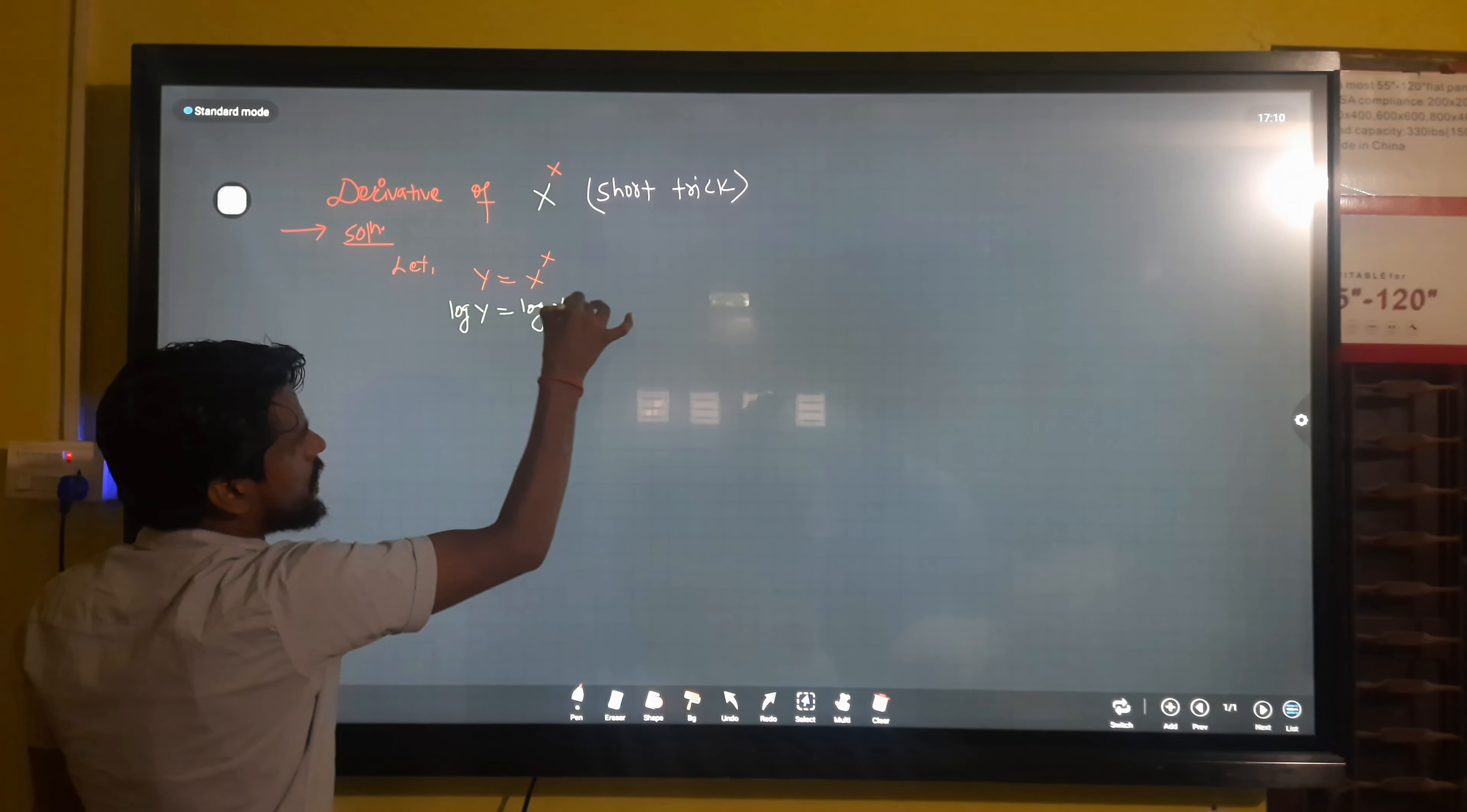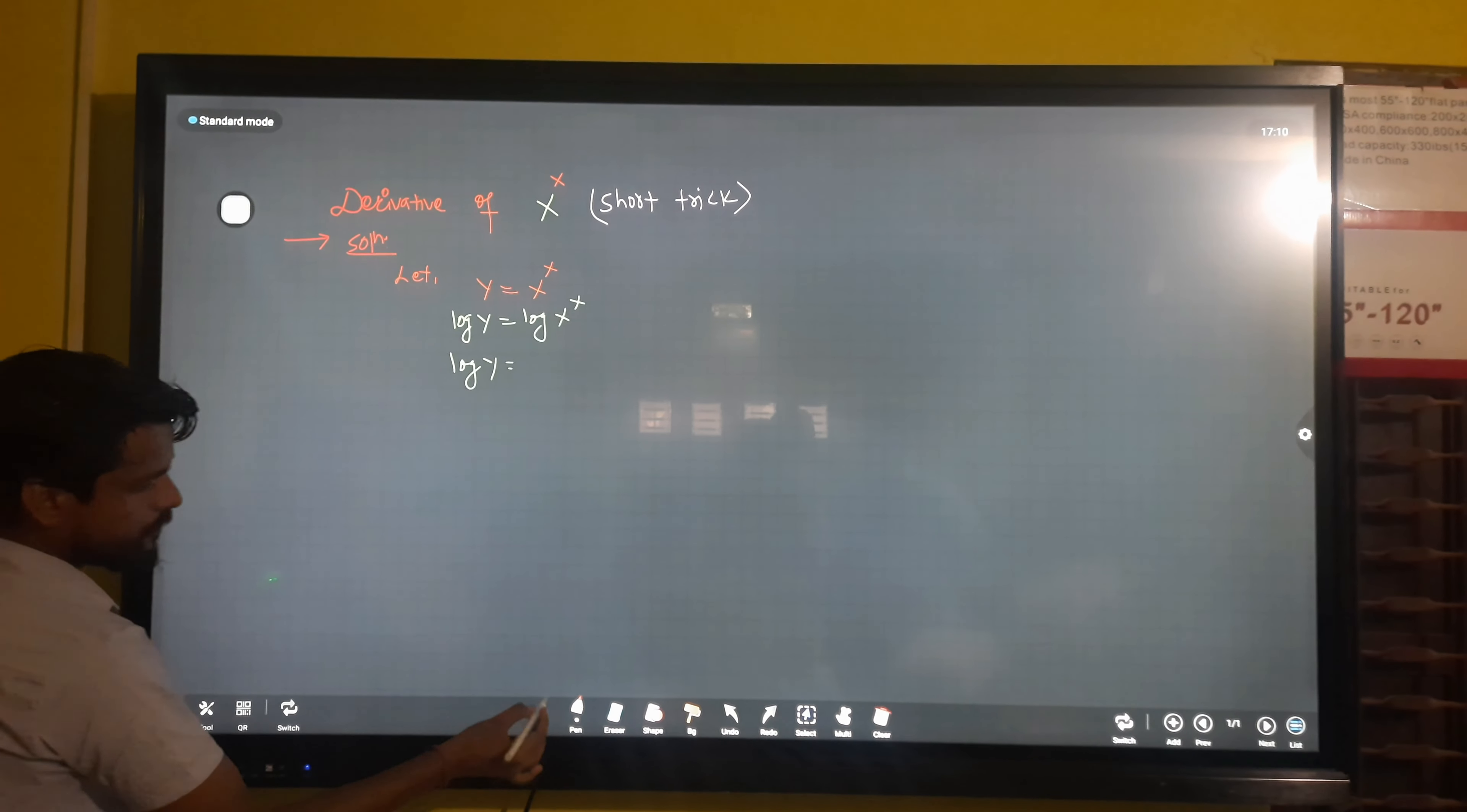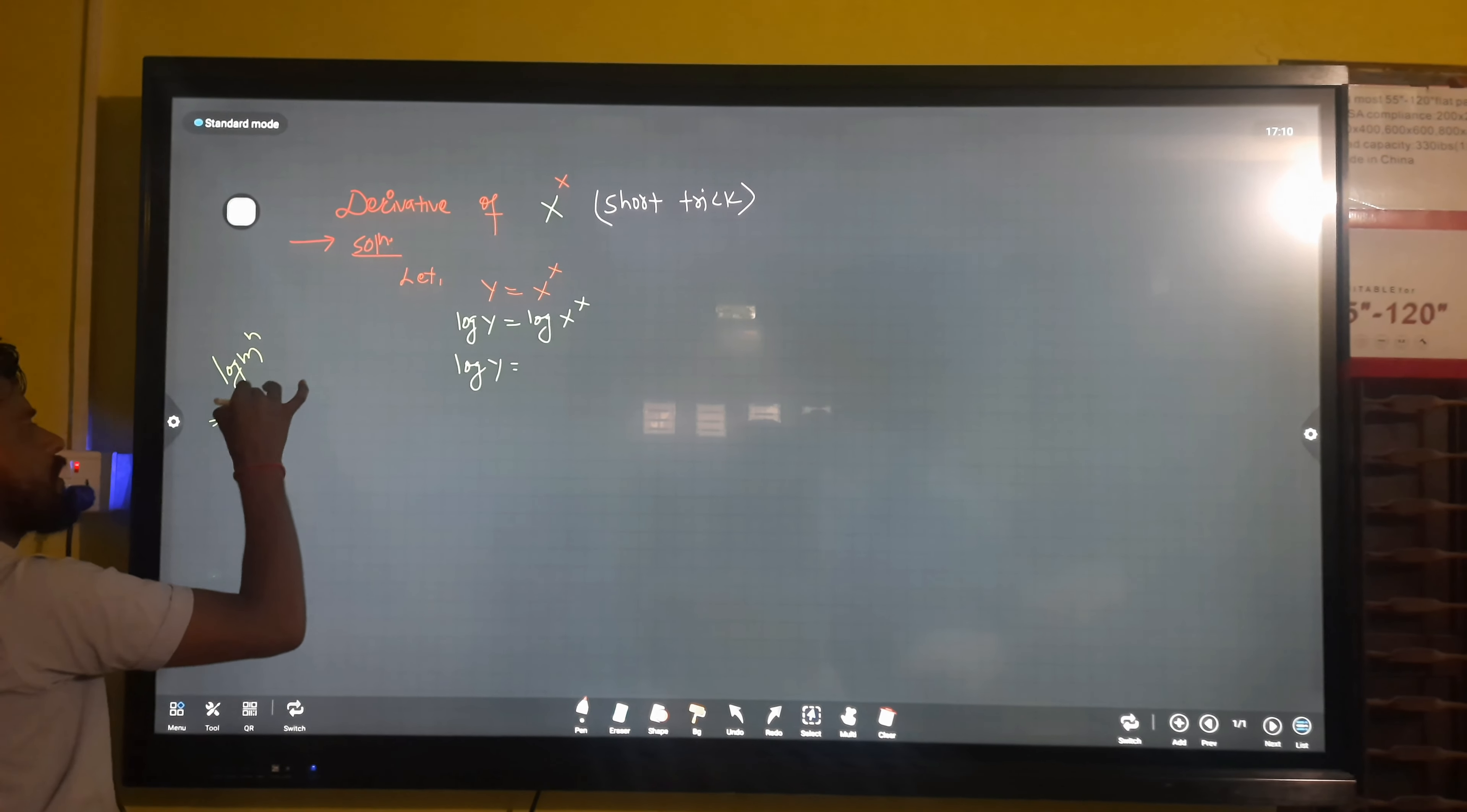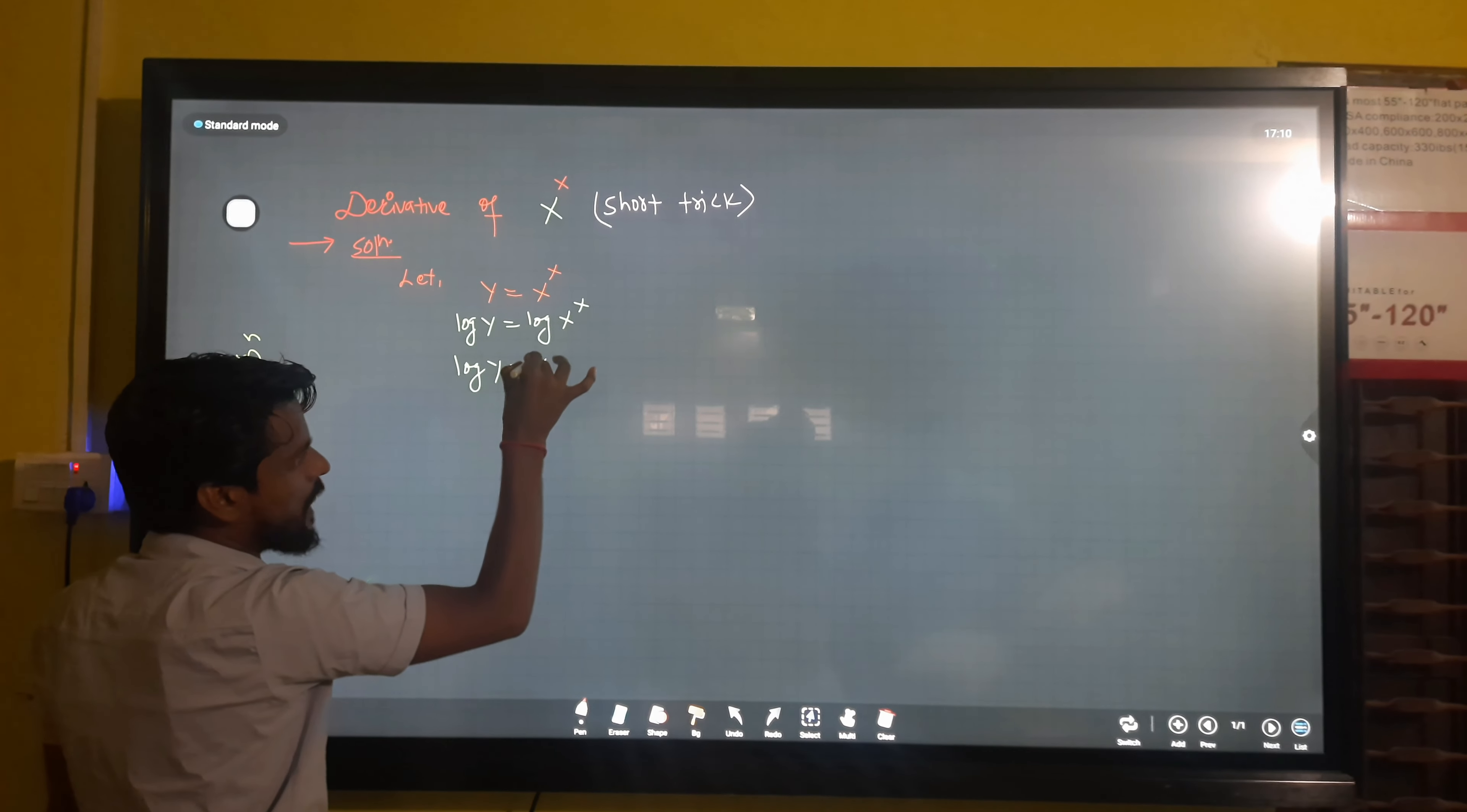Log y as it is. Now we have to use property of log. We know that log m to the power n, the power comes down as a multiplier: n log m. Using this property of log, the power x comes down: x log x.